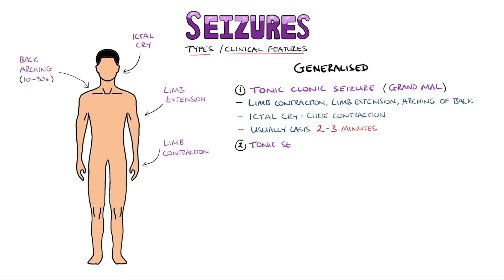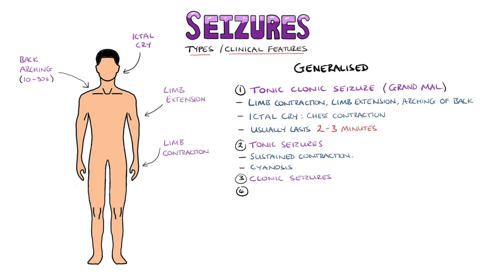Tonic seizures, as the name suggests, present with increased tonicity, meaning a sustained contraction similar to the start of the tonic-clonic seizure. Cyanosis may be seen if the seizure affects breathing. Clonic seizures are characterised by the shaking movements just mentioned. Myoclonic seizures feature muscle spasms, either in select muscle groups or across the body generally.